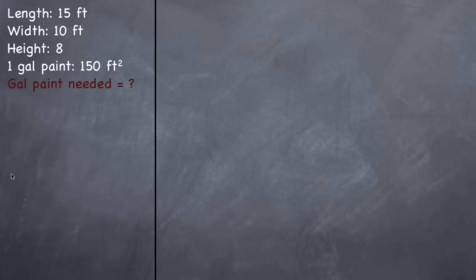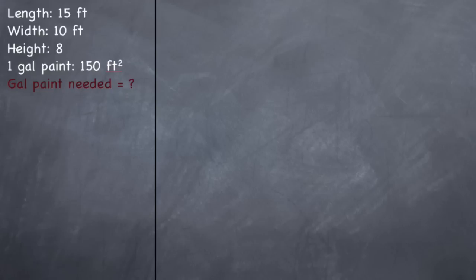We are going to paint a room. This question was actually on my grade one exam — not word for word, but similar. They've given you the dimensions of a room: the length is 15 feet, it's 10 feet wide, the walls are 8 feet high, and one gallon of paint covers 150 square feet. They want to know how many gallons of paint are needed to paint this room.